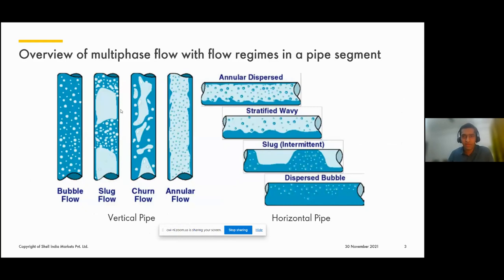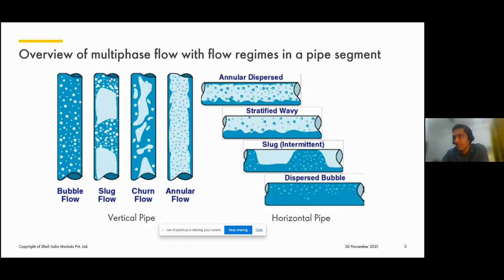Multi-phase flows are highly complex, non-linear phenomena encountered in several industrial applications, predominantly in oil and gas pipelines. Several flow patterns can exist depending on the velocities of the two phases, densities, viscosity, surface tension, pipe diameter, and inclination. Flow can be laminar or turbulent, steady or unsteady; gas and liquid can occur as segregated flows, droplets, or bubbles. We distinguish between a limited number of typical flow patterns, including bubble flow, slug, churn, annular for vertical pipes, and annular dispersed, stratified, slug, and dispersed bubble for horizontal pipes.